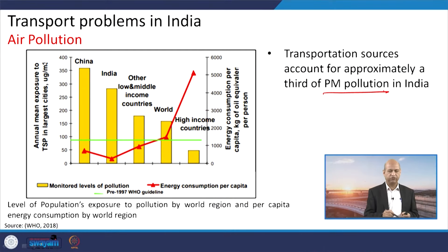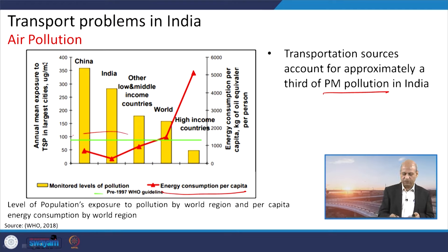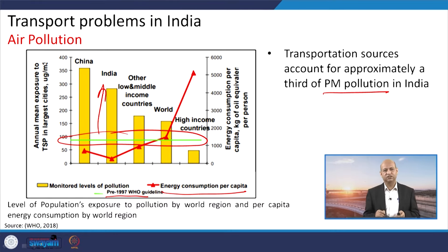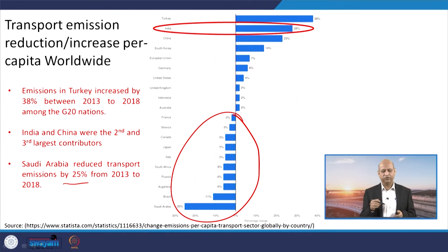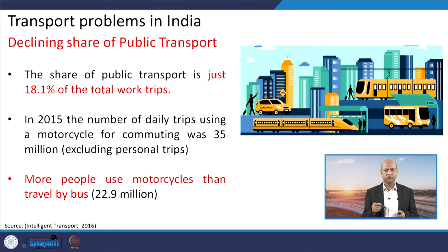Regarding particulate matter pollution, India's emissions are lower than Chinese emissions, and energy consumption per capita is also lower. However, this is not a reason to be complacent — our particulate matter levels still exceed pre-1997 WHO guidelines by a significant margin. We should try to lower particulate matter emissions because particulate matter directly affects our respiratory system and exposure leads to several respiratory health problems.